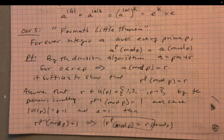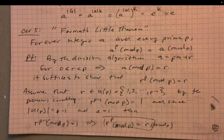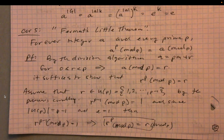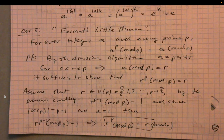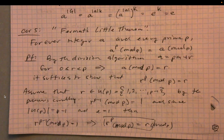This is an example of using concepts from group theory to prove a theorem that predates group theory. That will do it for this section. When we come back, we'll be jumping into a very cool concept from abstract algebra called external direct products. Until then, take care.